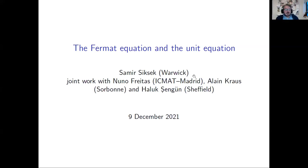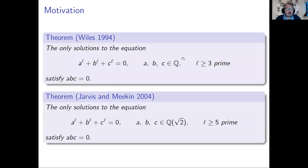Thank you very much for the invitation. This talk is joint work with Nuno Freitas, Alan Krauss, and Haluk Sengun. The title is 'The Fermat Equation and the Unit Equation.' Everyone knows the statement of Fermat's Last Theorem proved by Andrew Wiles: this equation has no non-trivial solution, meaning every solution satisfies ABC equal to zero, where A, B, C are rational numbers and the exponent L is at least three.